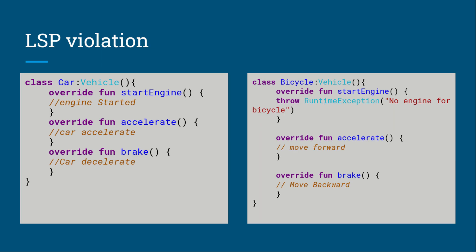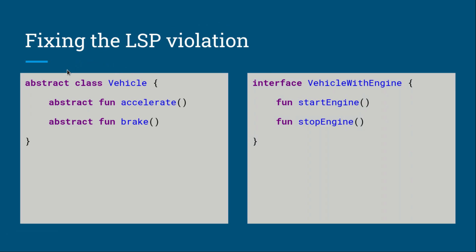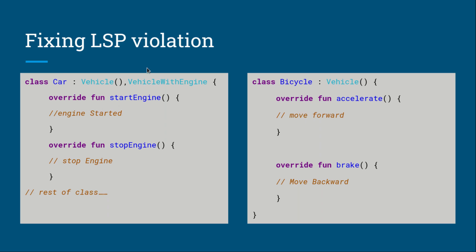We can fix this and avoid violating LSP by refactoring the hierarchy. We take the abstract Vehicle class and keep only the functions of accelerate, brake, and other common functionality. We then create an interface called VehicleWithEngine, because a class cannot inherit from two abstract classes but can implement multiple interfaces. This interface has start engine and stop engine functions. The Car class inherits from both Vehicle and VehicleWithEngine, while the Bicycle class only inherits from Vehicle and gets only the methods it actually needs.